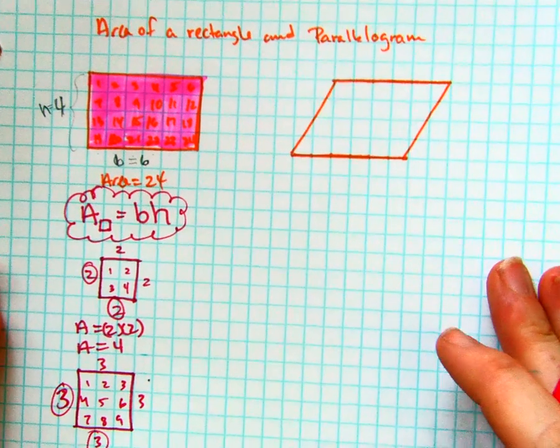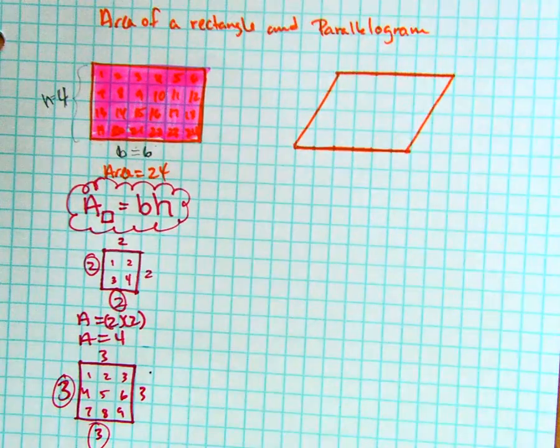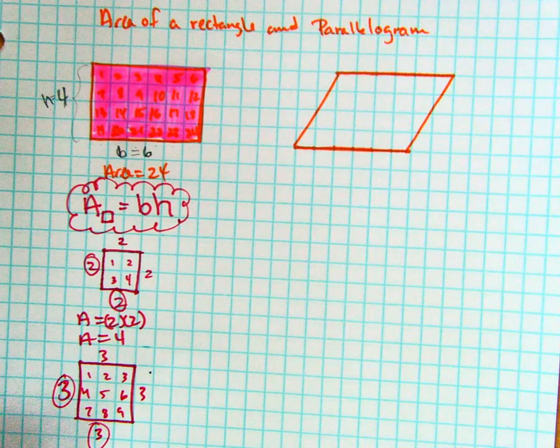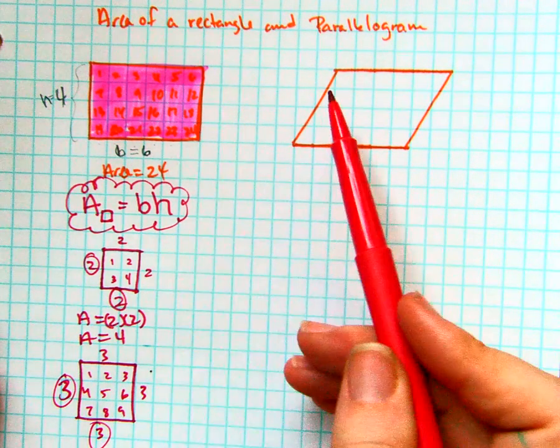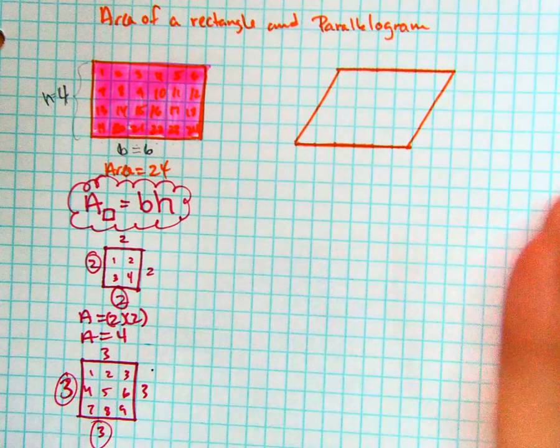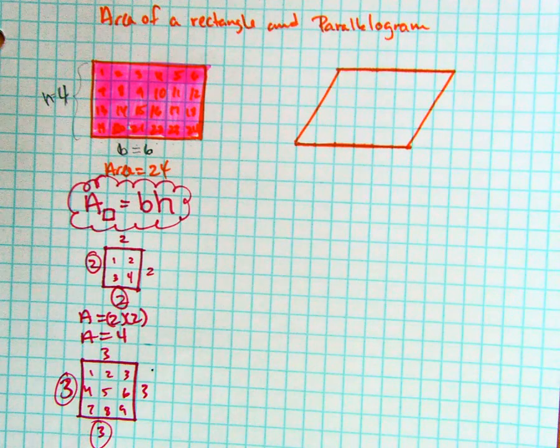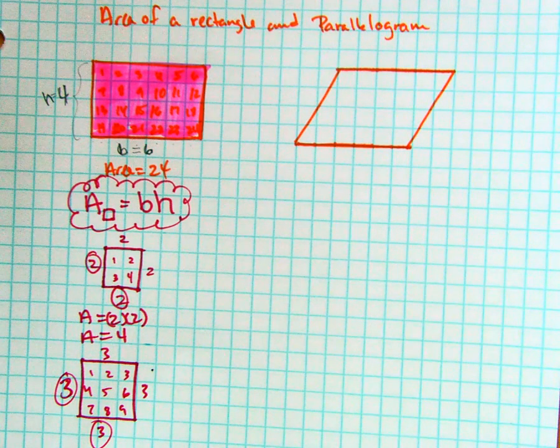Now a parallelogram, remember, is the general rectangle. So whatever is true about the rectangle must also be true about the parallelogram. If you remember the chart where the parallelogram had children and one of its children was a rectangle kind of thing.